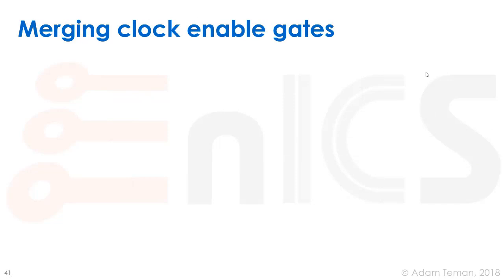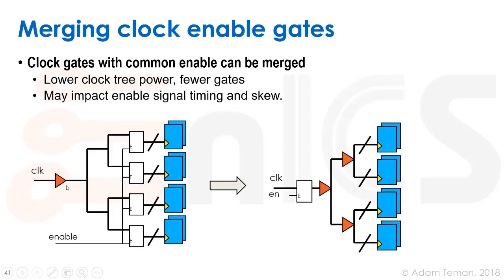We can merge clock enable gates. As you saw, putting a latch and AND gate is kind of expensive — latches are big. So we can find places where the same enable signal goes to multiple flops. If the same enable signal is going to multiple flops, we can use one clock gating cell providing the gated clock to all those flops. The extra area of this integrated clock gating cell is then divided among all those flops. We can tell the synthesis tool our threshold for how many flip-flops must share an enable signal before clock gating is used, otherwise it's too expensive.